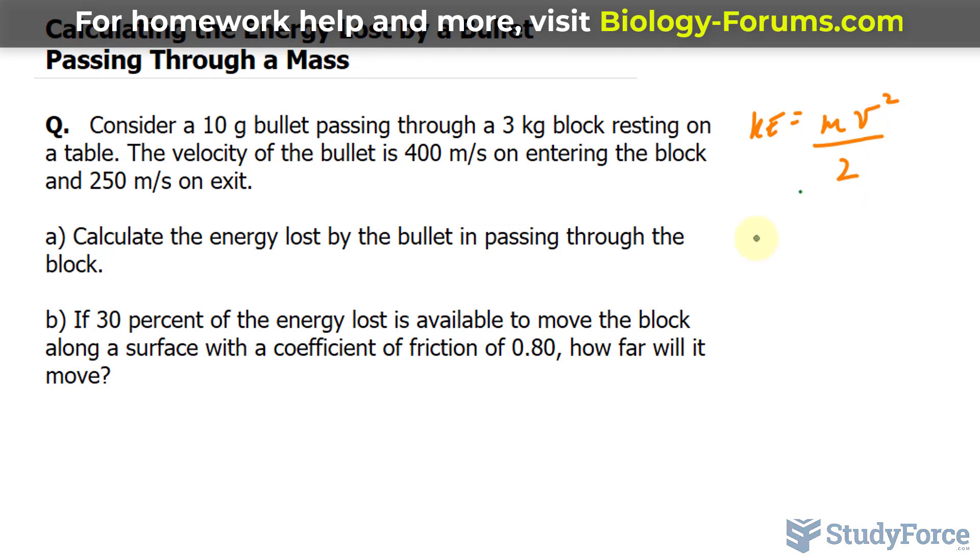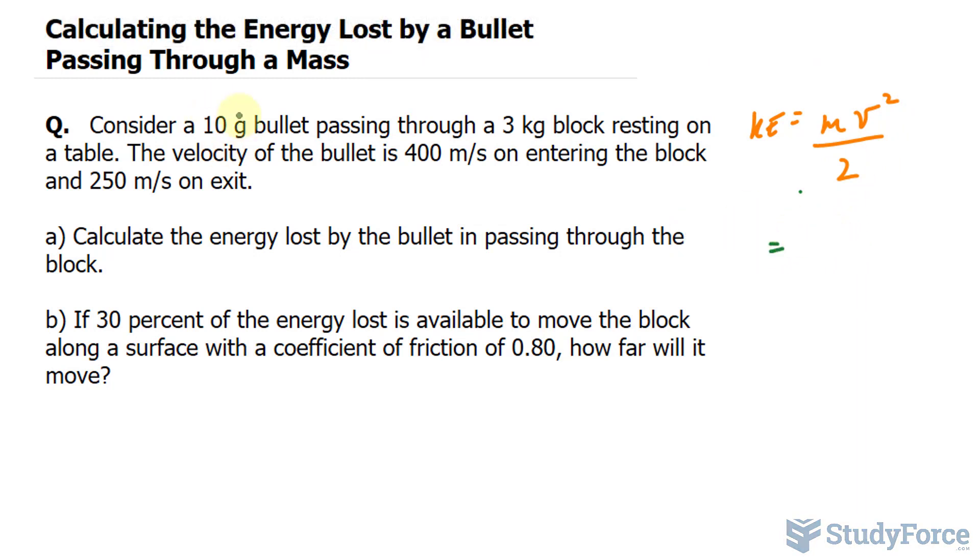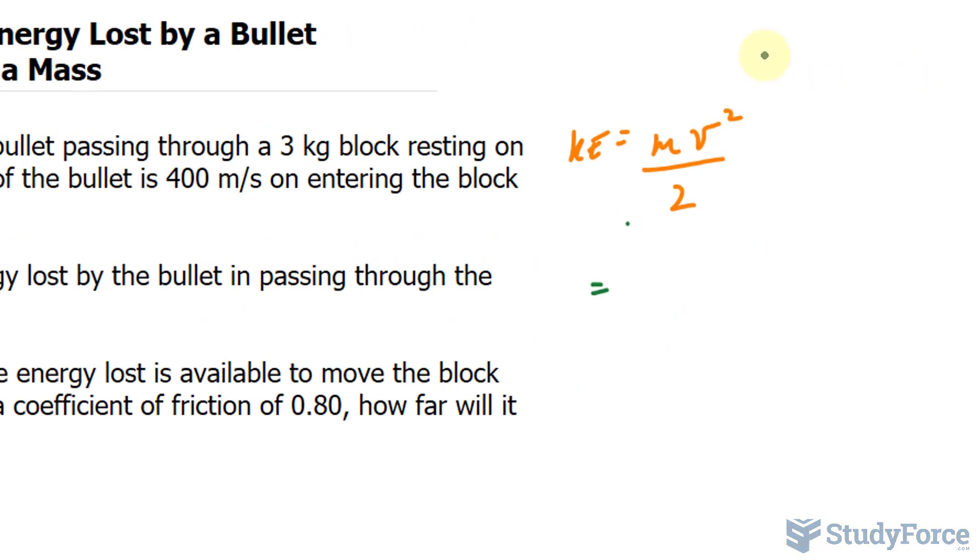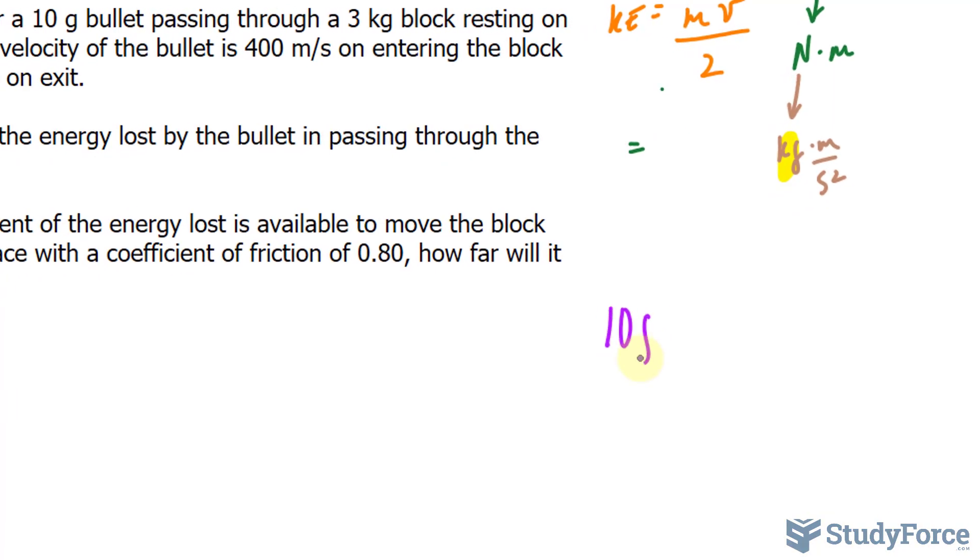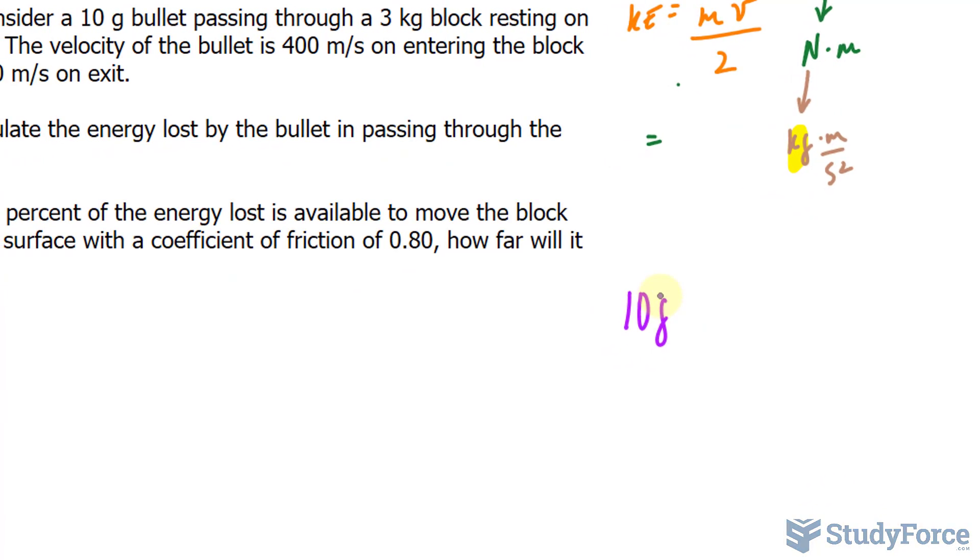We'll begin with the initial kinetic energy. So the mass is in grams. It needs to be in kilograms because kinetic energy has the units joules, and joules can be broken down into newtons times meters, and newtons is broken down into kilograms times meters per second squared. So our mass has to be in kilograms. So converting 10 grams into kilograms, you divide this by 1,000. If I divide this by 1,000, I should end up with 1.0 times 10 to the power of negative 2 kilograms or 0.01 kilograms.